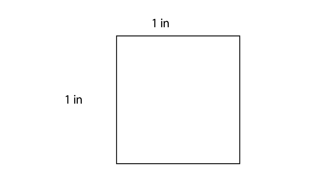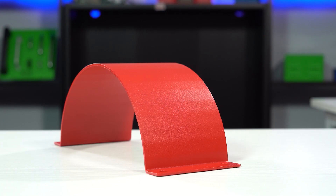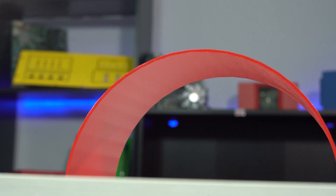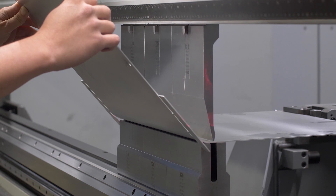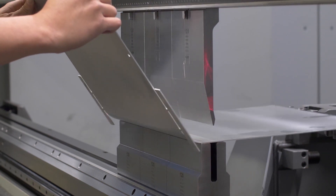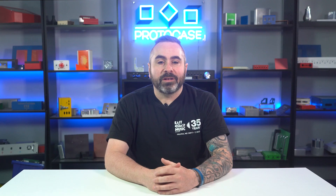In a previous tech tip, we saw how clearances and different types of tolerances are a great method to account for your manufacturing constraints. If you want a recap of that video, we shared a link in the description below. Now building on that video this week, we're going to talk about the different types of fit that you should be modeling for your mounting holes.